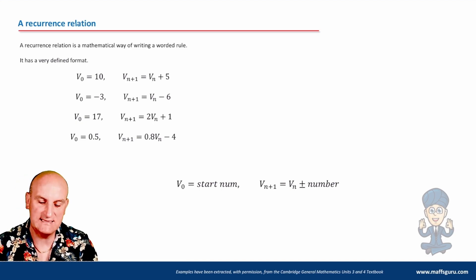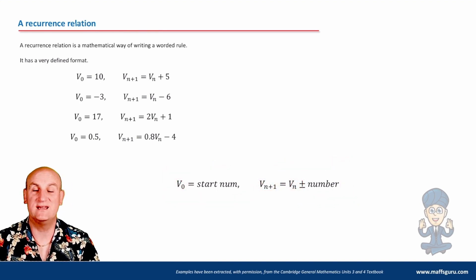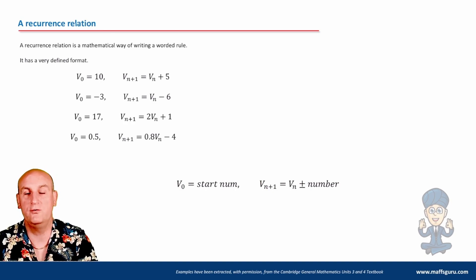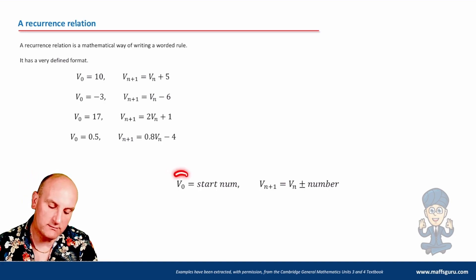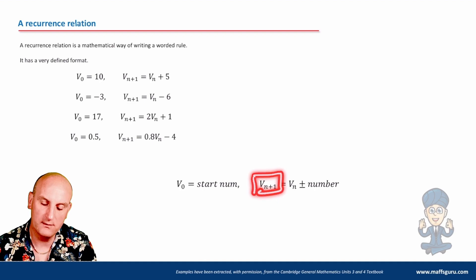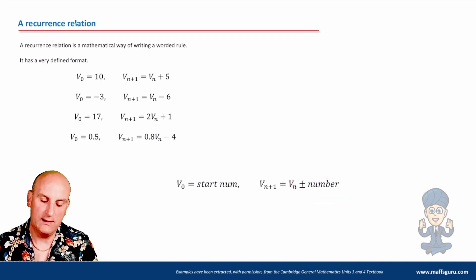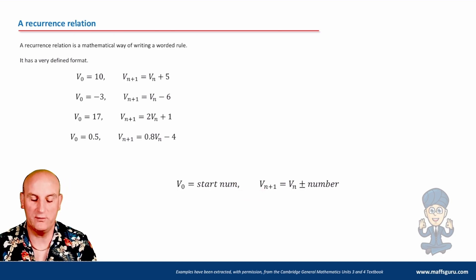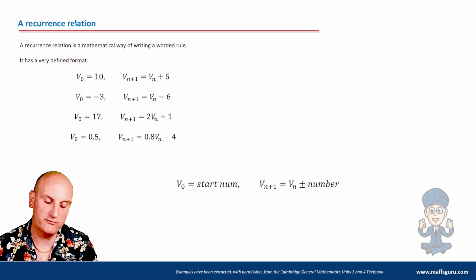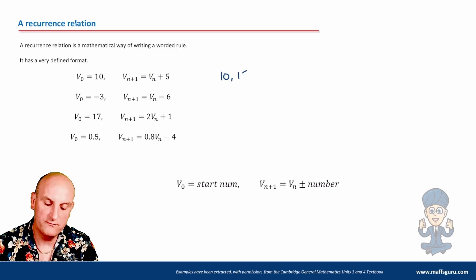A recurrence relation has a very specific format. The letters can change, and if you use the wrong letters in an exam — because they'll give you the letters — sadly you're going to lose marks. Our recurrence relation always starts with V₀ equals a start number. They will always give a start number. Then V(M+1) = V(M) plus or minus some number for linear sequences. For example: V₀ = 10, V(M+1) = V(M) + 5. That means my start number is 10, and to get to my next term, take my current term and add 5. That gives a sequence of 10, 15, 20, 25, 30, and so on.